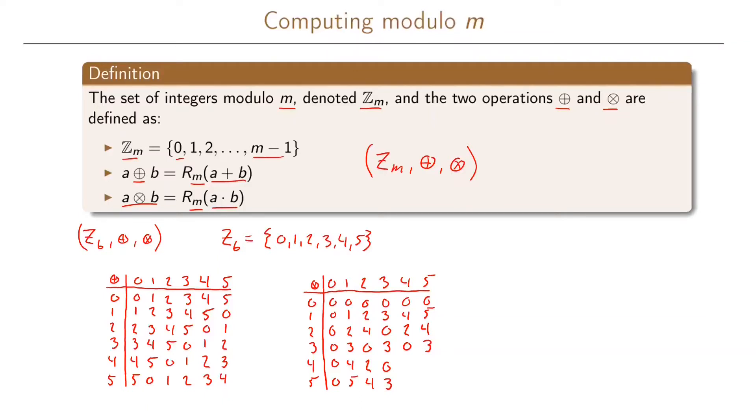4 times 4 is 16. If we divide this by 6, we will have 4 as the remainder. And if we take 4 times 5, we will get 20. If we divide this by 6, we will get 2 as the remainder. So same for 4 times 5. And finally, 5 times 5 is 25. And if we divide this by 6, we will get the remainder 1.